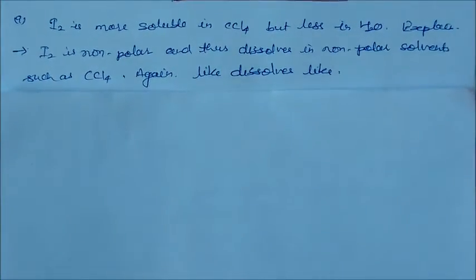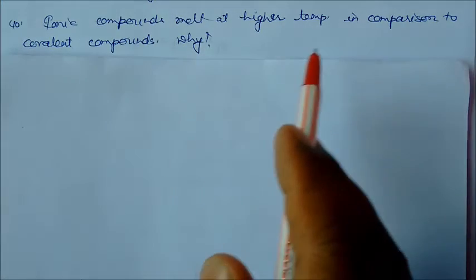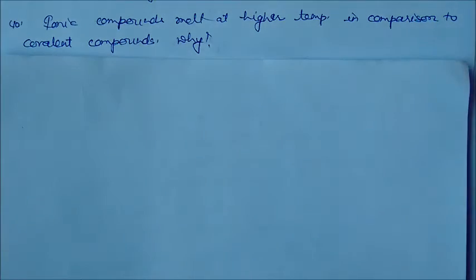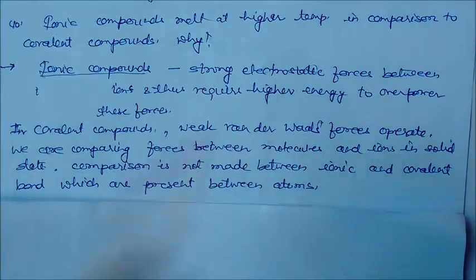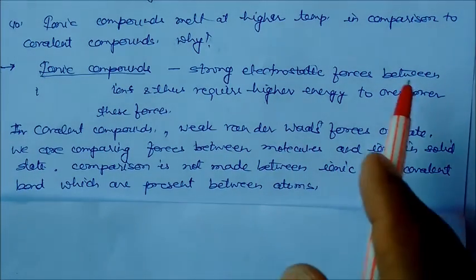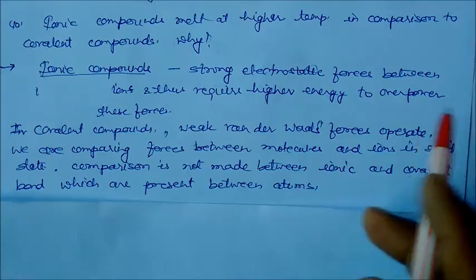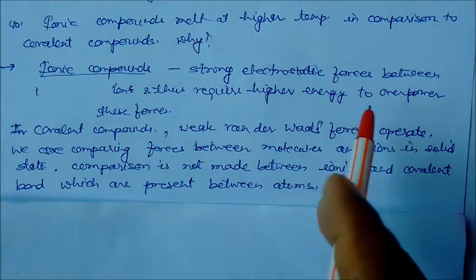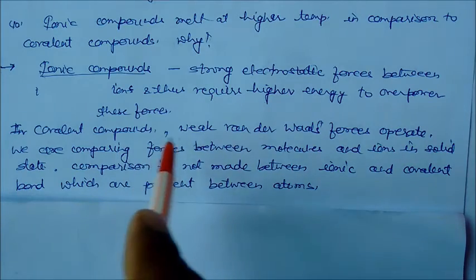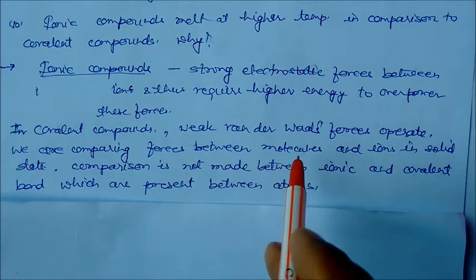Ionic compounds melt at higher temperature in comparison to covalent compounds. What is the reason? Ionic compounds have strong electrostatic forces between ions and require high energy to overpower these forces. So it is strong electrostatic forces, so they have high energy. But in covalent compounds it is just weak van der Waals forces operating.